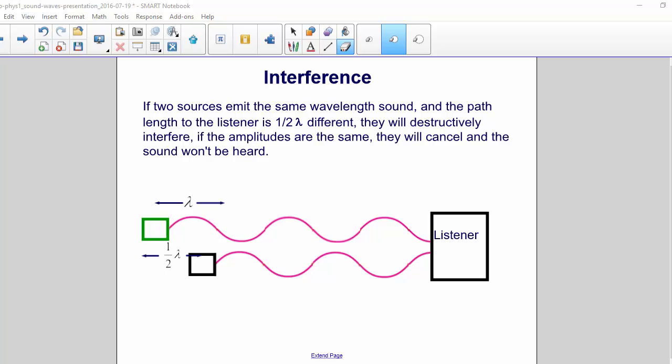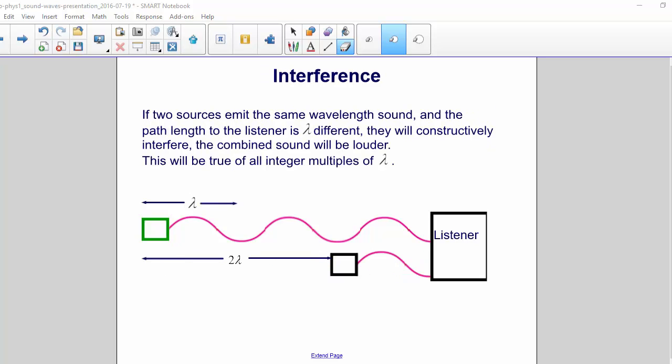If the amplitudes are the same, they will cancel, and the sound won't be heard at all. Constructive interference occurs when the path difference is any multiple of a wavelength.